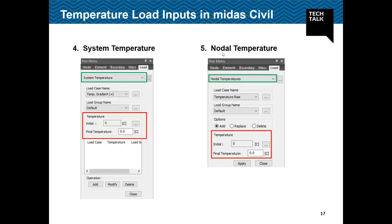Nodal temperature is used when you want to consider thermal variation load analysis and apply different temperatures to different parts of the structure instead of the entire structure. You specify the final temperature and select the particular nodes, and it is applied directly to those node locations only — rather than to element locations. Generally, temperature loads are applied to elements, but nodal temperature assigns the load to node locations, allowing different temperatures to be assigned to different parts of the structure.